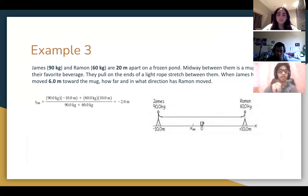It's the mass of James times his position, plus the mass of Ramon times his position, all divided by their total mass. So that will be minus 900 plus 600 over 150, which is minus 2 meters. So as you can see in the diagram, the center of mass is 2 meters to the left of the cup or the mug.